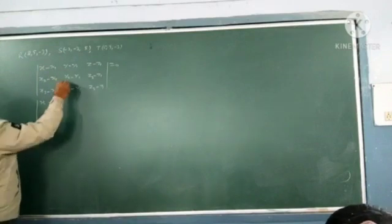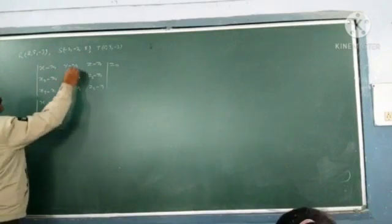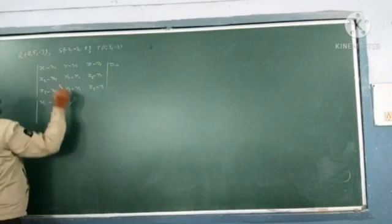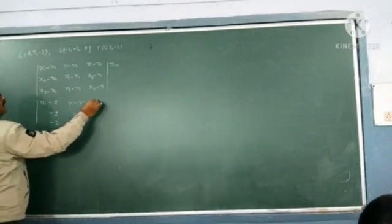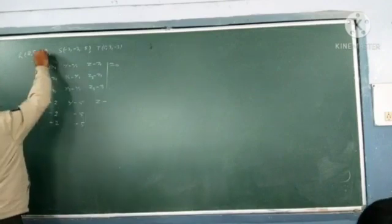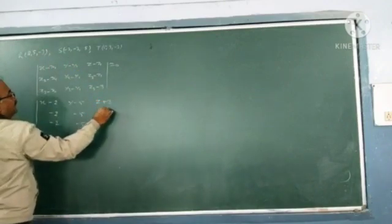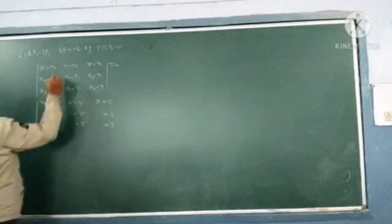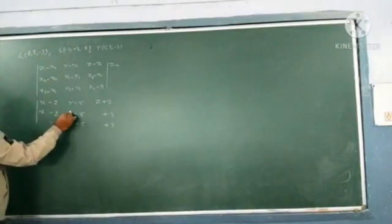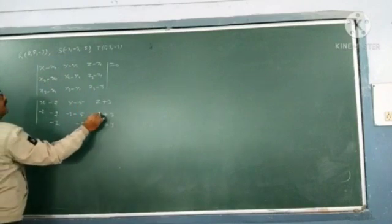Then y as it is, y1 is 5, so minus 5, minus 5, minus 5. Z minus z1 minus 3, it becomes plus 3, plus 3 and plus 3. Now x2 is minus 2, y2 is minus 3, and z2 is 5.